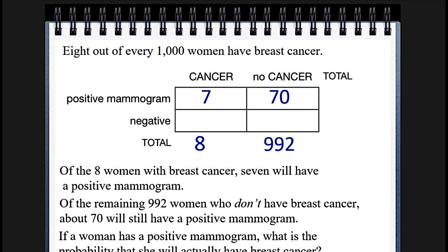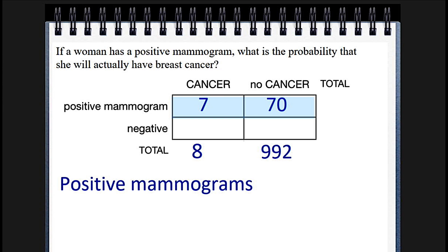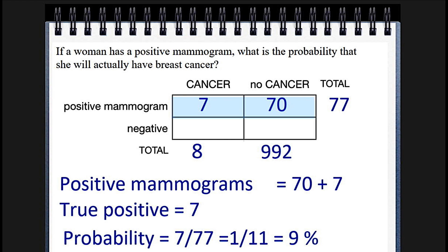So if a woman has a positive mammogram, what's the probability she'll actually have breast cancer? We know the answer because we add up the positive mammograms: the seven true positives, and 70 of the people who don't have cancer but still test positive. We add up the 70 and the seven. The true positives are seven, and the total probability is seven divided by 77, or 9%. I think that was pretty easy. We've just rearranged the way we described the problem.